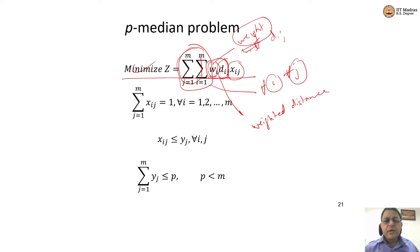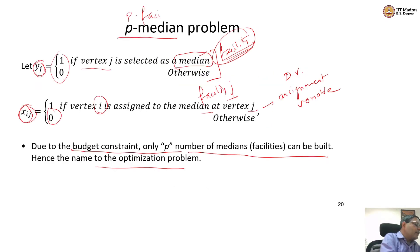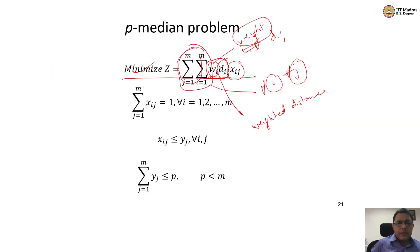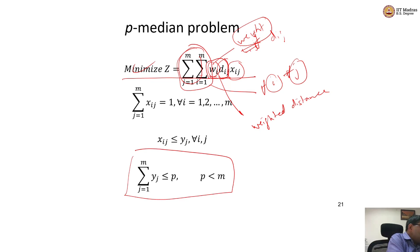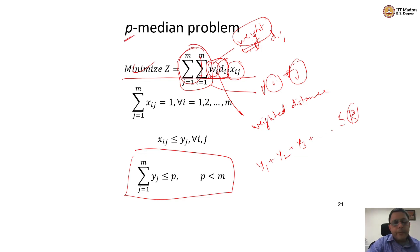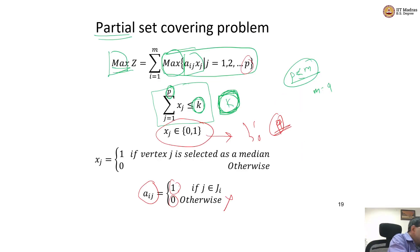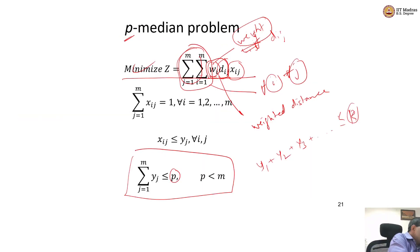Now, what are the constraints of the p-median problem? The first and most important constraint is that I can only have P number of facilities. YJ dictates which facilities are opened. So the summation of YJ over all J has to be less than or equal to P — the budget on the number of facilities. Since the problem is more popularly called the p-median problem, I keep P. Earlier we had called this same number K — same idea. This is the most important constraint because it dictates the P.